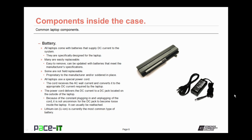Now let's move on to batteries. All laptops come with batteries that supply DC current to the system. They are specifically designed for the laptop. Many are easily replaceable — easy to remove and can be updated with batteries that meet the manufacturer's specification. But some are not field replaceable; they're proprietary to the manufacturer and/or they're soldered in place. All laptops use a special power cord. The cord receives the AC wall current and converts it to the appropriate DC current required by the laptop's battery, supplying that current in the wattage requirements that the battery needs. The power cord delivers the DC current to a DC jack located on the outside of the laptop.